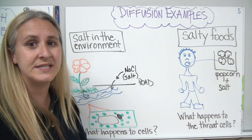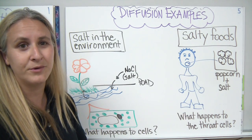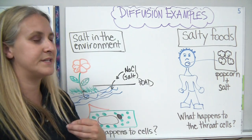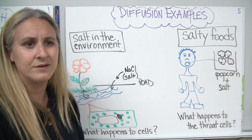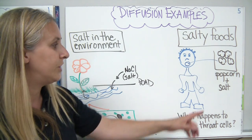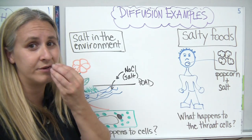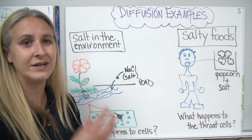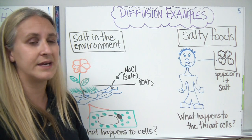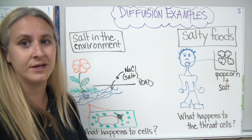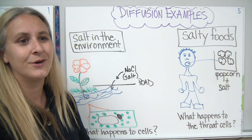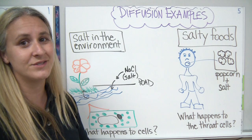Another example is eating salty foods. Remember going to the movies and eating very salty popcorn? You eat the popcorn, swallow it, and after a while you notice — wow, I'm thirsty. Why do you get so thirsty? What happens to the cells in your throat? You've added a lot of salt and very little water — a highly concentrated salt solution with your saliva, possibly as much as 80% salt and only 20% water. So what happens to the cells in your throat? Why do movie theaters sell a lot of drinks along with their very salty popcorn?